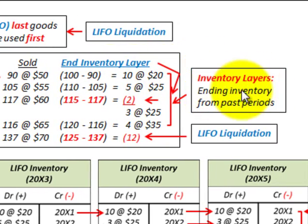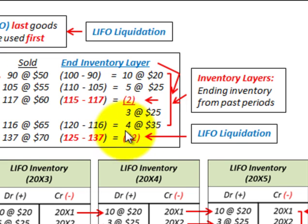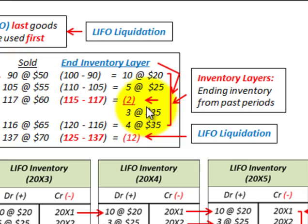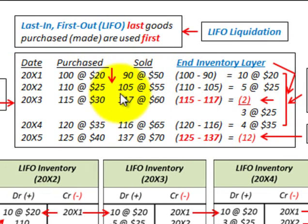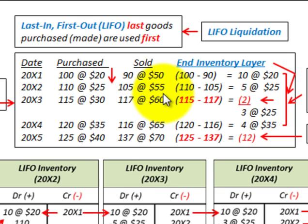The ending inventory from past periods is carried over into the inventory for the next period. As we build up these layers, then at some point in time we're going to actually sell more than we purchased. And then we're going to go back and liquidate these layers, or use these layers. So the first thing I'm going to do is lay out this problem, go through the numbers, look at some flows through T-accounts, and then look at this LIFO liquidation and how it affects our profits.